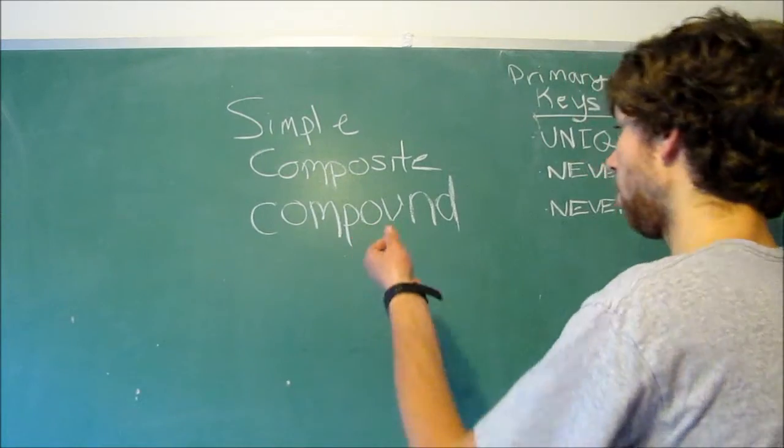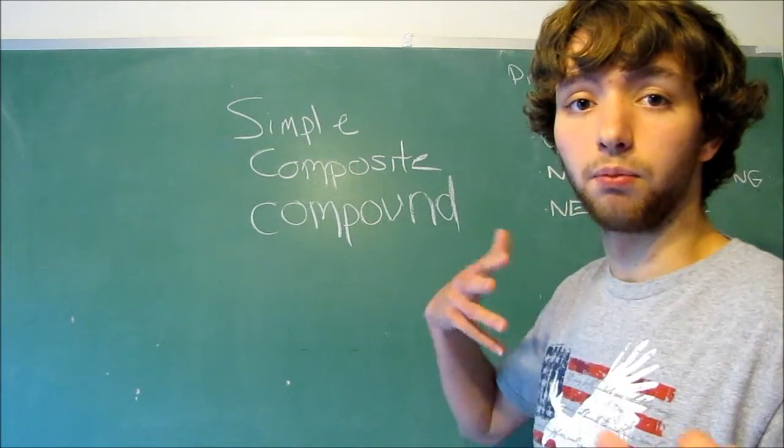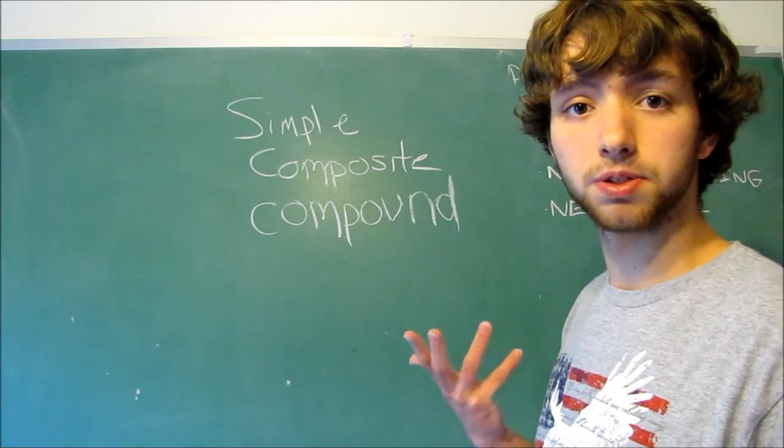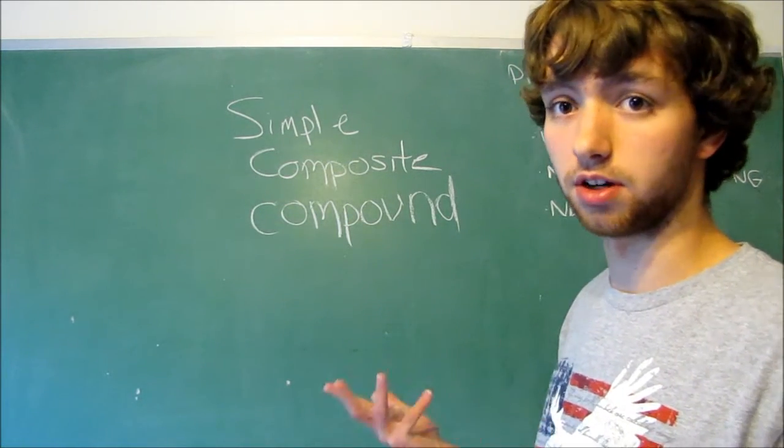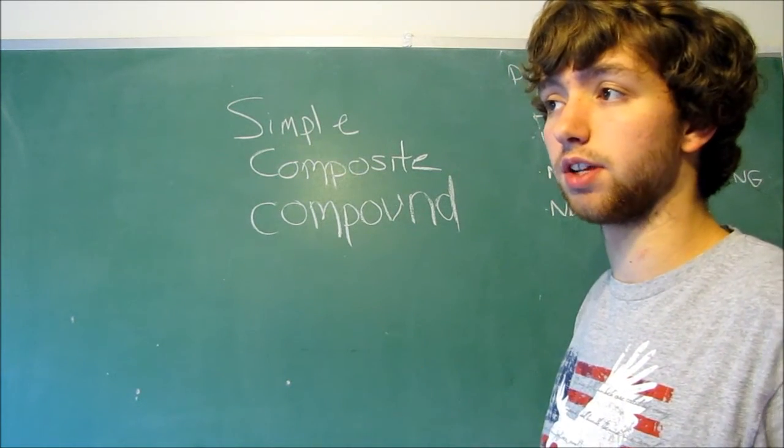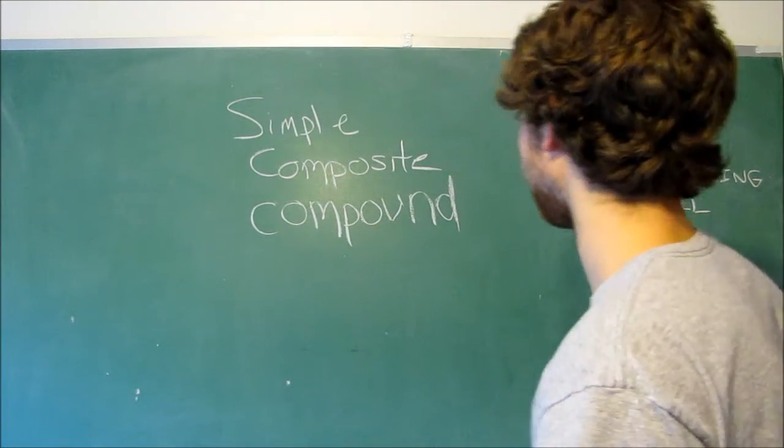Moving on. A compound key is basically when it's a key that has multiple columns and they're all keys themselves. So the most common example of this is for intermediary tables.